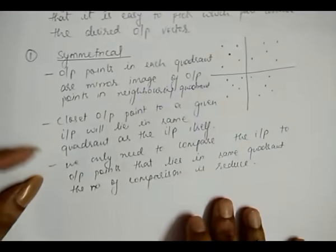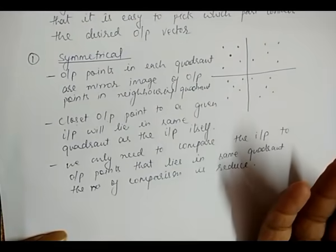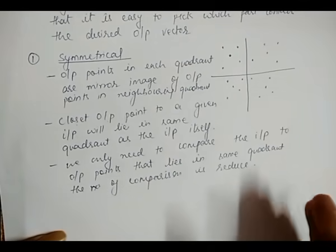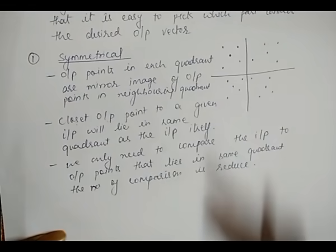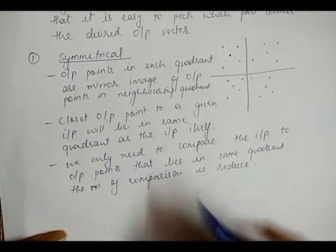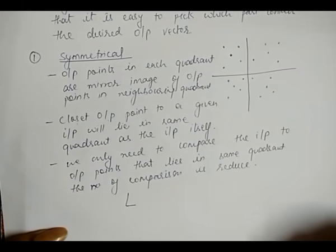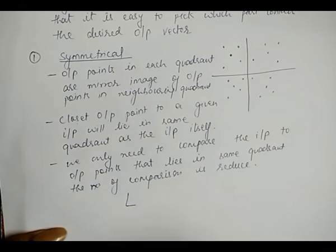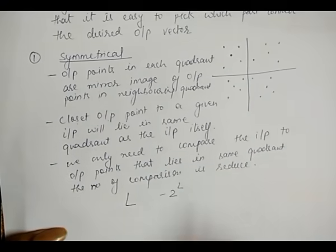This approach can be extended to L dimensions, where the sign of the L components of the input vector can tell us in which of the 2^L regions the input lies. This in turn reduces the number of comparisons by a factor of 2^L.